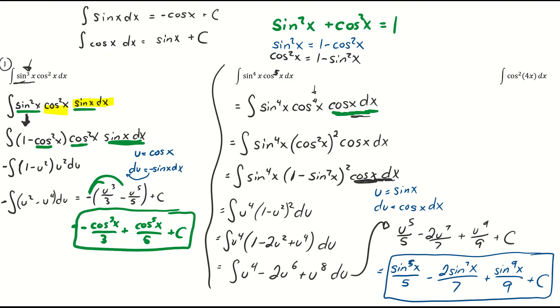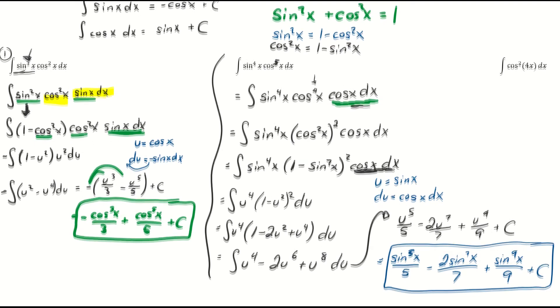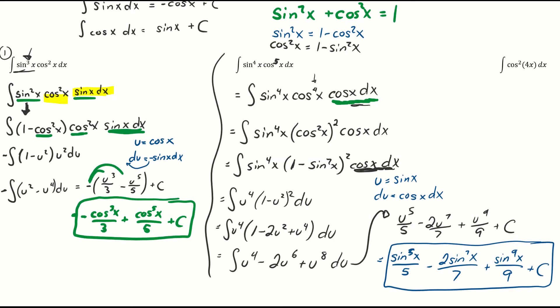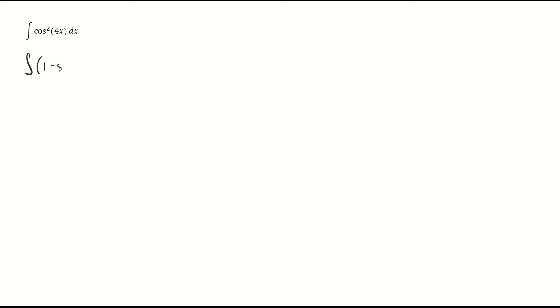So if we have an odd power of either sine or cosine, we peel off one power and then use the trigonometric Pythagorean identity to get the rest into sine or cosine. Now for the last problem, you'll notice there is only a cosine and no sine. You might think to convert cosine squared using 1 minus sine squared, but then there's no cosine left for du — Pythagorean identities aren't working here.